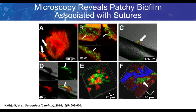The biofilm is not only on the foreign body itself — panel E shows a patch of biofilm growing on the surrounding fibrous sheath associated with the sutures. Importantly, when you see the preoperative images, you might expect the whole suture or mesh to be completely covered, but in the lab we see very small patches — sometimes no more than 10 to 100 cells, between 10 to 100 microns of biofilm on these sutures. It is truly like looking for a needle in a haystack.